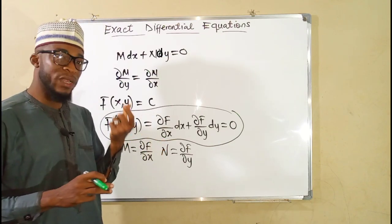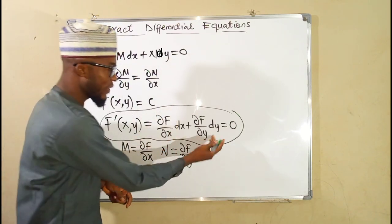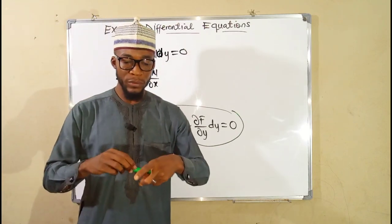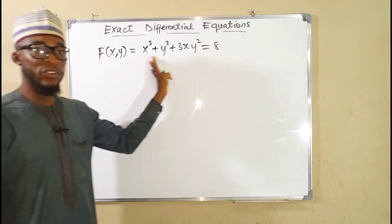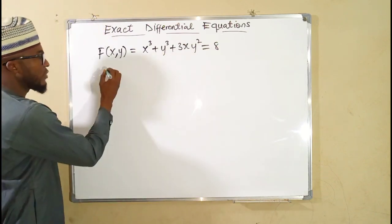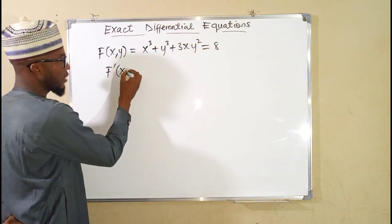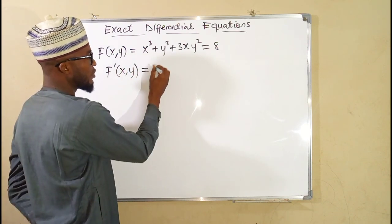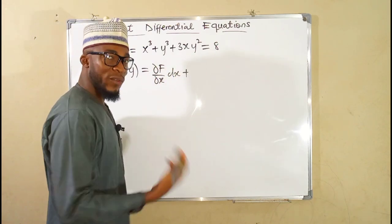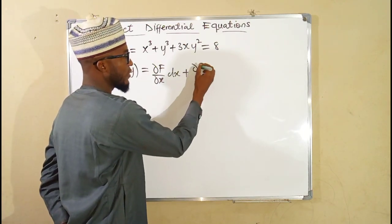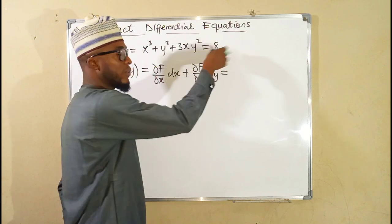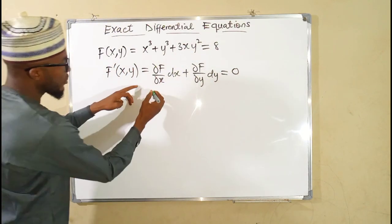To understand this clearly, let me take an implicit function, differentiate it to obtain the standard form, and then show how we can solve it back to recover the original function. Using the total derivative via the chain rule, we get the partial derivative of f with respect to x times dx, plus the partial derivative of f with respect to y times dy, equals zero — since differentiating a constant gives zero.